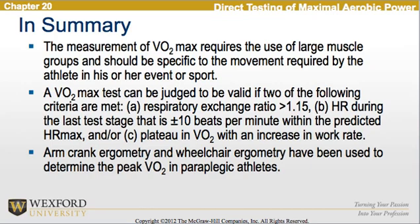In summary, the measurement of VO2max requires the use of large muscle groups and should be specific to the movement required by the athlete in his or her event or sport. A VO2max test can be judged valid if two of the following criteria are met: the respiratory exchange ratio is greater than 1.15, the heart rate during the last stage is within plus or minus 10 beats per minute of the predicted heart rate maximum, and/or there is a plateau of VO2 with increased work rate. Arm crank ergometry and wheelchair ergometry have been used to determine peak VO2 in paraplegic athletes.